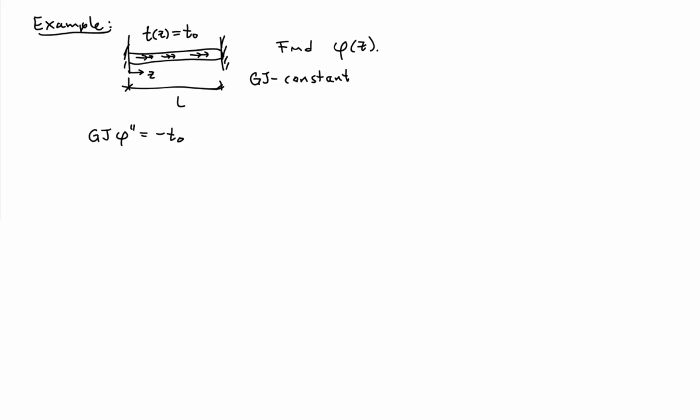As an approach, we'll use the differential equation of equilibrium in terms of the twist rate. So that says Gj phi double prime equals minus T0. I'll use primes to indicate differentiation with respect to Z.